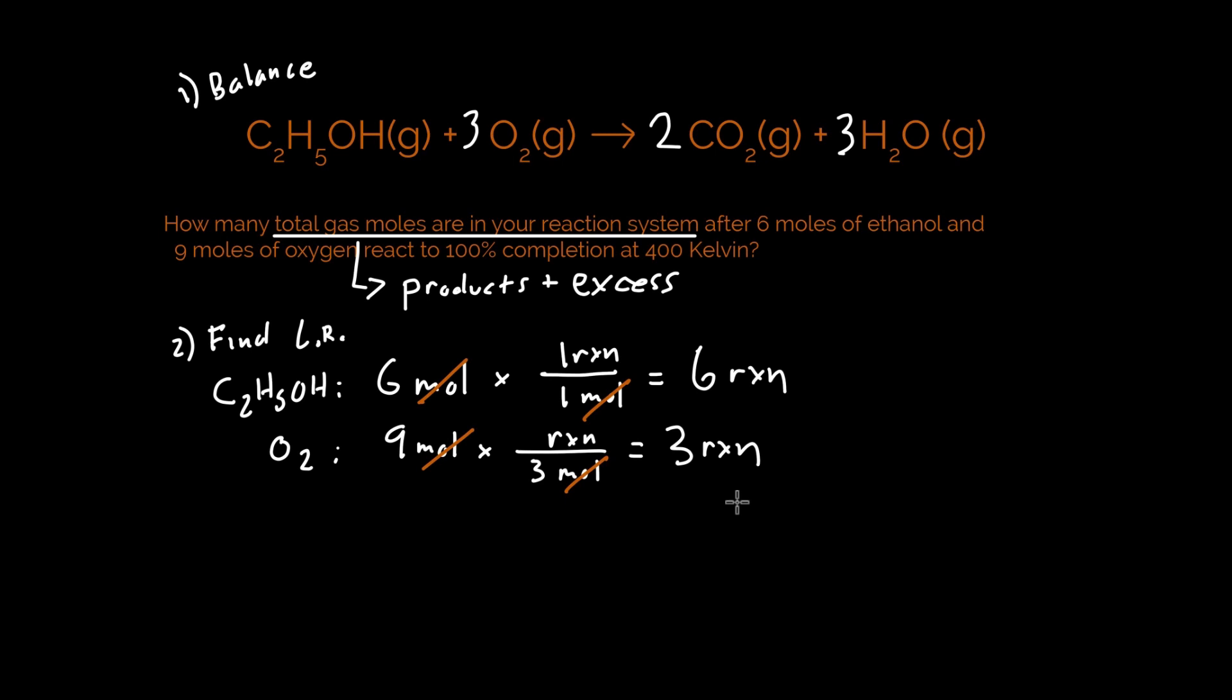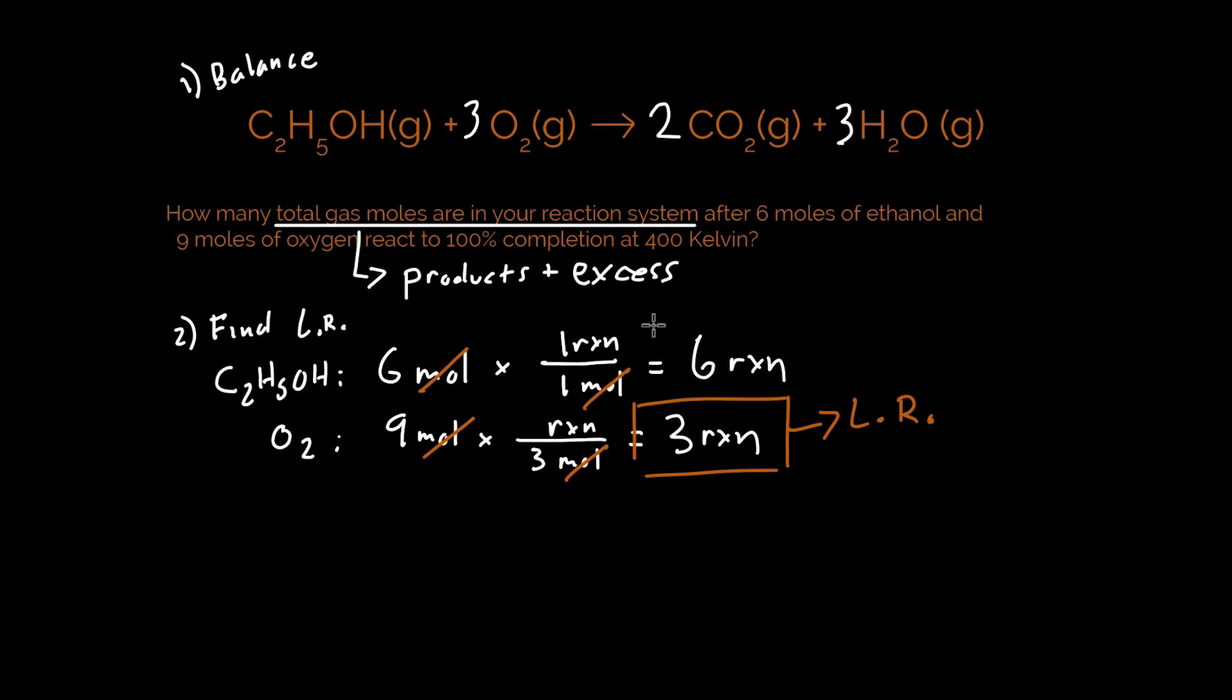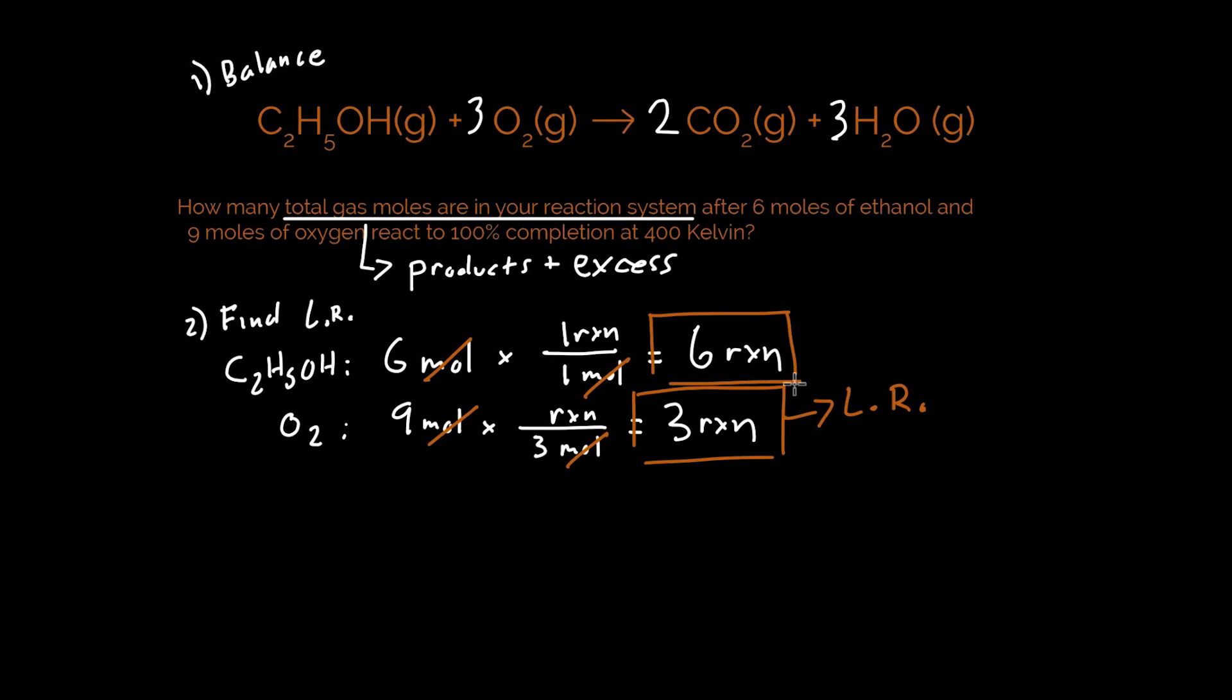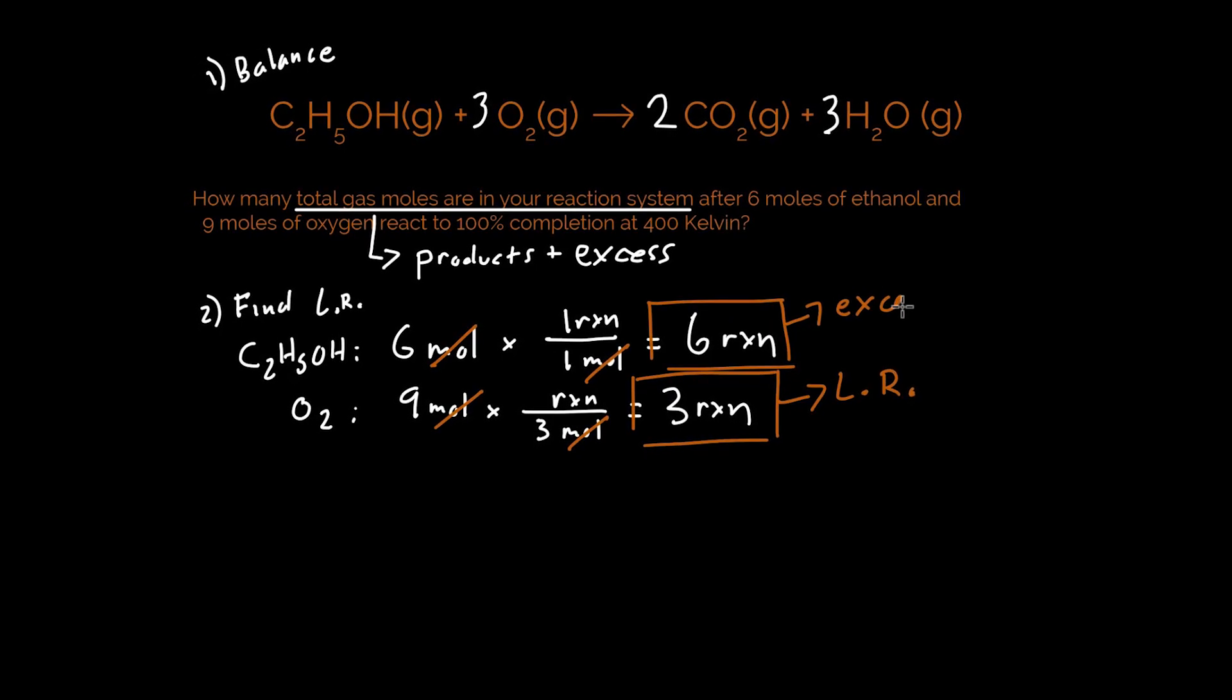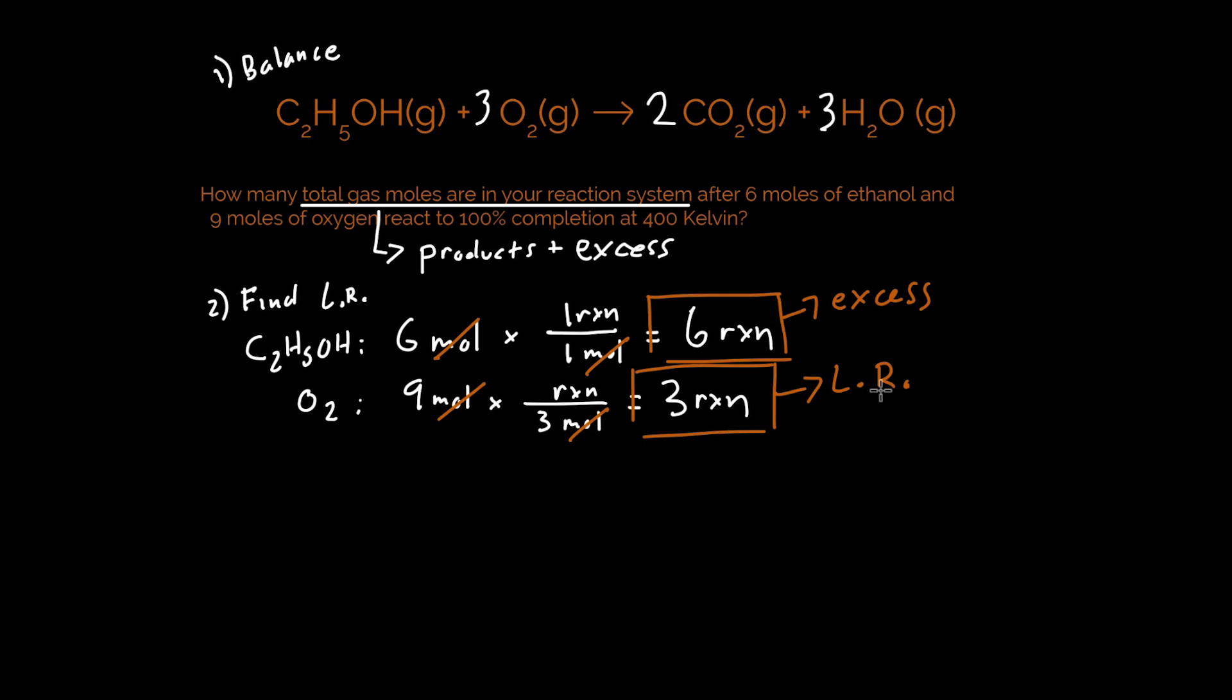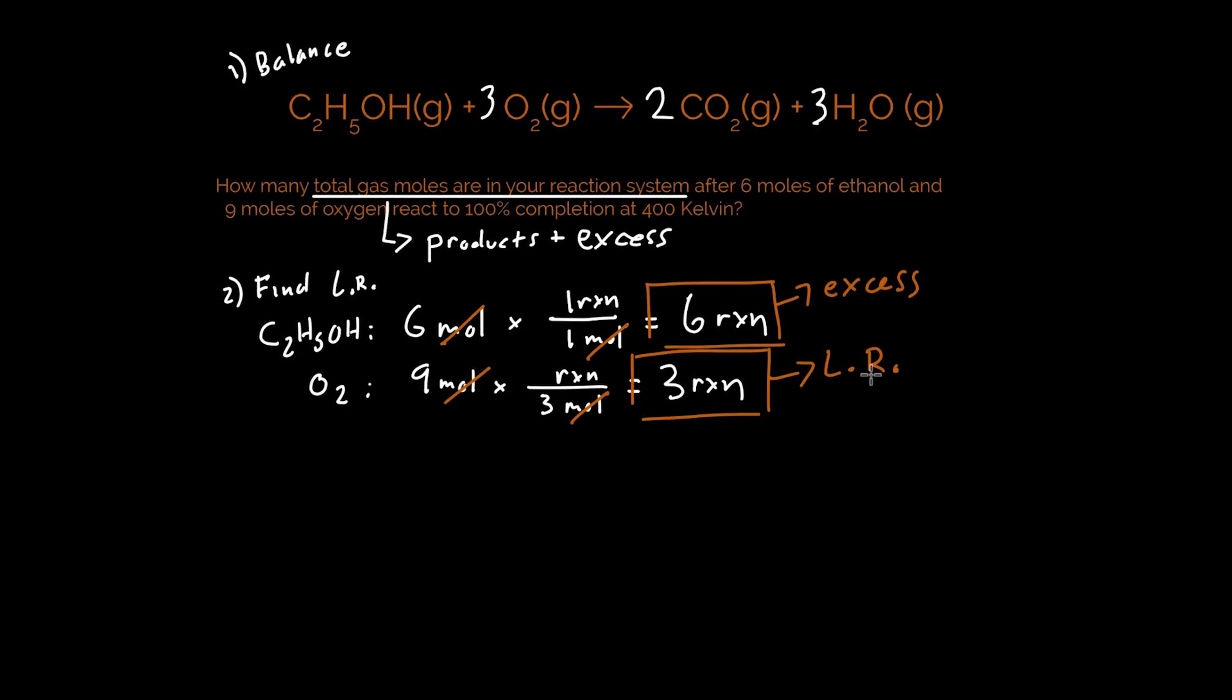What this means is that my oxygen is going to limit the amount of reactions I can run, and is therefore going to run out first. So by definition, our oxygen is our limiting reagent. It's going to be incredibly important to recognize that my ethanol is going to end up being in excess. What that means is we're not going to run through all of our ethanol in this experiment.